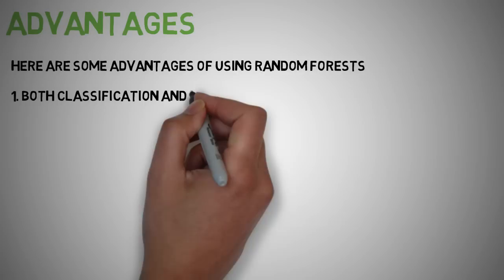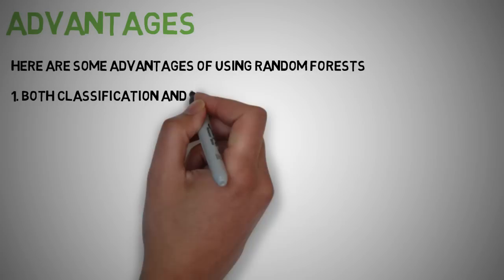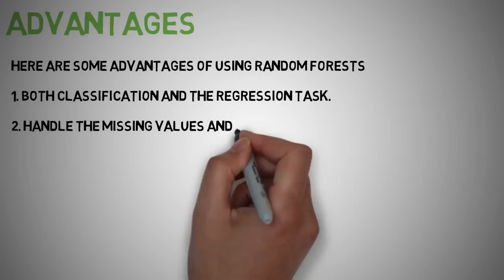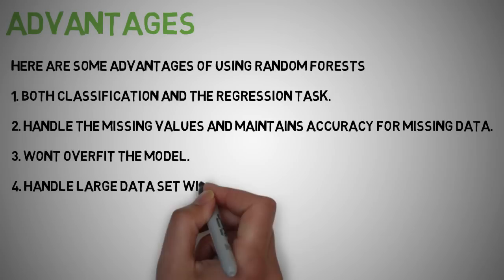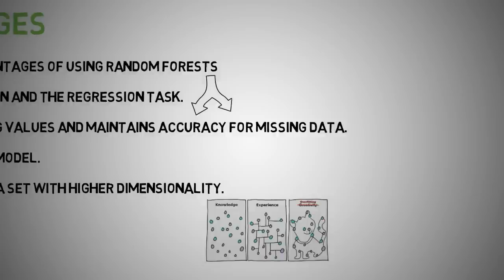The same random forest algorithm or random forest classifier can be used for both classification and regression tasks. Random forest classifier will handle the missing values and maintain accuracy when a large proportion of the data are missing. When we have more trees in the forest, random classifiers won't overfit the model. It has the power to handle large data sets with higher dimensionality.